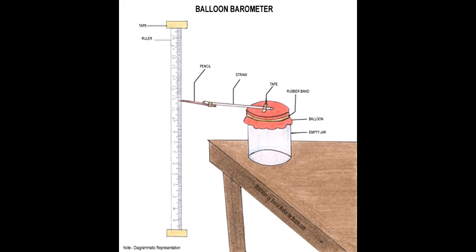When the pencil marks on the lower side of the scale, it indicates low pressure, thereby indicating that the weather is going to be a little rough and stormy. Whereas the rise in the measurements indicate high pressure, meaning fair weather.